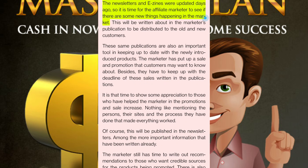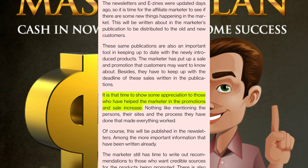The newsletters and e-zines were updated days ago, so it is time for the affiliate marketer to see if there are new things happening in the market. This will be written about in the marketer's publication to be distributed to old and new customers. These publications are also an important tool for keeping up to date with newly introduced products and promotions. It is also time to show appreciation to those who have helped in promotions and sales increases — mentioning persons, their sites, and the process they used.